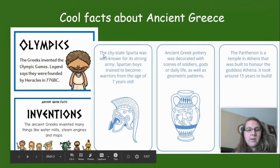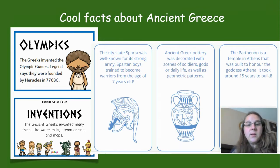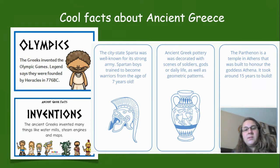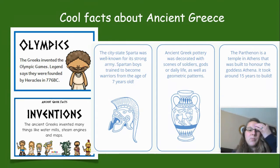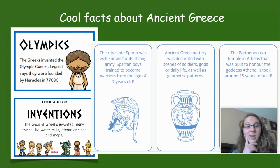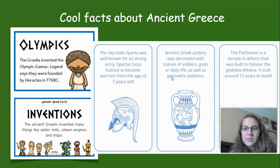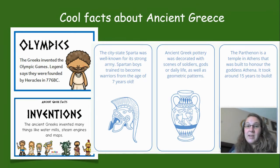The city-state Sparta was well known for its strong army, and it was located in Greece. Spartan boys trained to become warriors from the age of seven years old. At ESM, when you get to the middle and high school sports teams you're going to be called the Spartans — that's where it came from. Seven years old — isn't that like a second grader? I'd rather have you in art class! Ancient Greek pottery was decorated with scenes of soldiers, gods, daily life, and lots of geometric patterns — we'll discuss Greek pottery more next week.